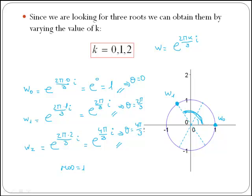And then 4 pi over 3 will be 1 pi over 3, 2 pi over 3, 3 pi over 3, 4 pi over 3, therefore here you have w2.